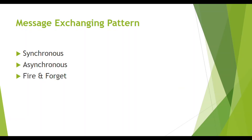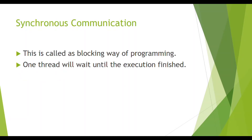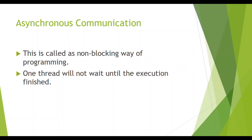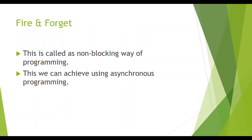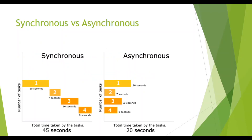The first is synchronous communication — this is called the blocking way of programming, where one thread will wait until the execution completion of another thread. The second is asynchronous communication — this is the non-blocking way of programming where one thread will not wait for another thread's execution completion. The third is fire and forget, which is also a non-blocking way of programming and can be achieved using asynchronous communication.